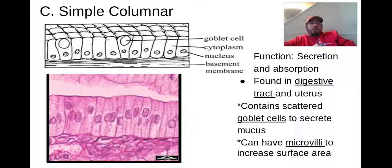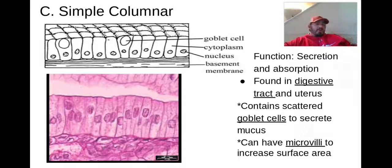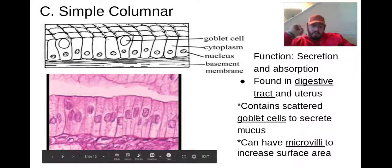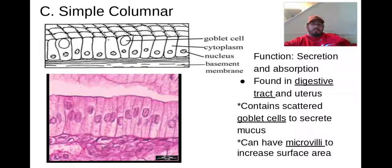Next, simple columnar. Simple means one layer, and columnar is that column, rectangular, or pillar-shaped cell. The functions are secretion and absorption. These are found in the digestive tract — they have things called goblet cells, which secrete mucus. Those goblet cells create mucus in our stomach, giving us a mucus membrane to protect us from our acid. They can also have microvilli to increase surface area.